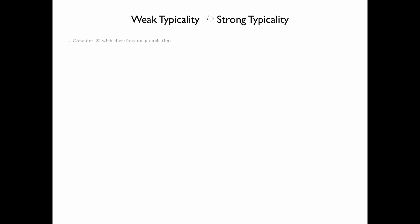Now we are going to show that weak typicality does not imply strong typicality. This is shown by the construction of a weakly typical sequence which is not strongly typical. Consider a random variable x with distribution p, such that p(0) equals 0.5, p(1) equals 0.25, and p(2) equals 0.25. Note that p(1) equals p(2). Consider a sequence x of length n, and let q(x) be the relative frequency of occurrence of symbol x in the sequence, where x equals 0, 1, and 2.